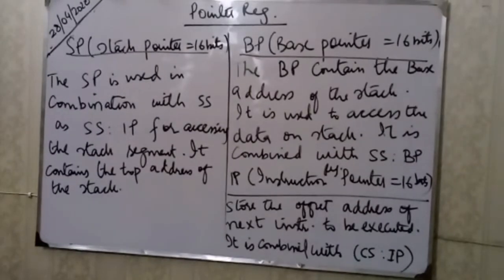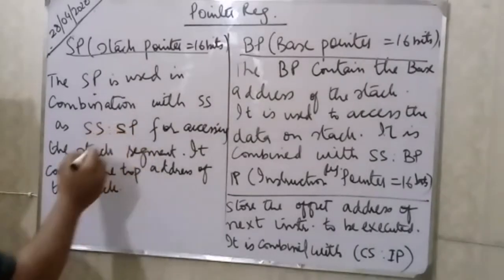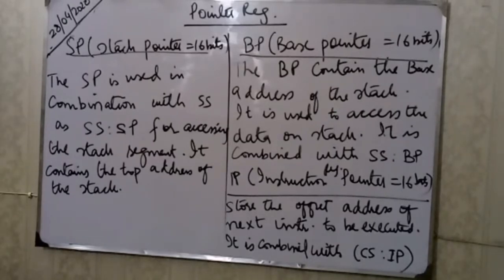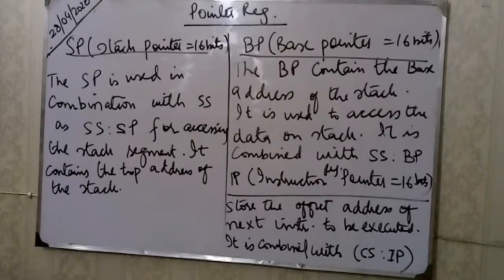Now let's talk about the pointer registers. The first is the stack pointer, SP, which is 16 bits. The stack pointer is used in combination with the stack segment register. It contains the top address of the stack. The base pointer, BP, contains the base of the stack and is used to access data on the stack.